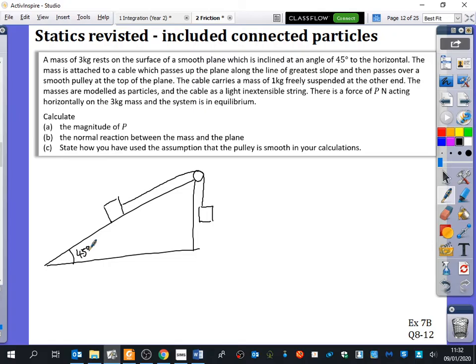It says the masses are modelled as particles. What does it mean if they've been modelled as particles? What kind of things have we assumed if we're modelling them as particles? No air resistance. Good. So if they said, state how you've used the modelling as particles, there's no air resistance. There's something else about particles as well. The mass is concentrated at one point. In other words, we can ignore their size, we can ignore the dimensions of the block. We can say that they're just like a single point. But probably in this case, we're more interested in the fact that it's got no air resistance.